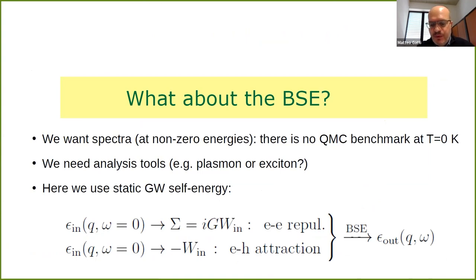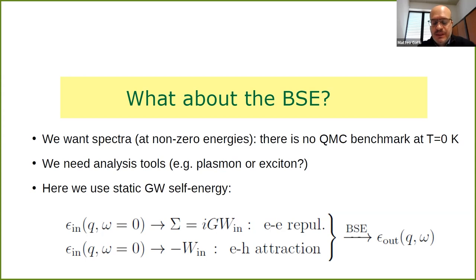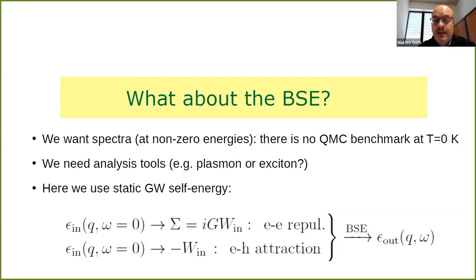Now why do we want to use the Bethe-Salpeter equation? First, we want spectra, and there is no quantum Monte Carlo benchmark at T=0 for finite excitation energies — what I showed are only benchmarks for the static screening. Second, we want analysis tools: the TDDFT calculations shown so far have no analysis tools for distinguishing between plasmons and excitons. In addition, we need accurate results for models — in particular for the homogeneous electron gas in the framework of connector theory. In the following, I will use a static GW approximation for the self-energy: the input will always be a static dielectric function, and the output of the Bethe-Salpeter equation will be the full spectra.